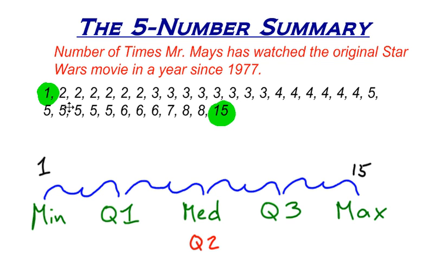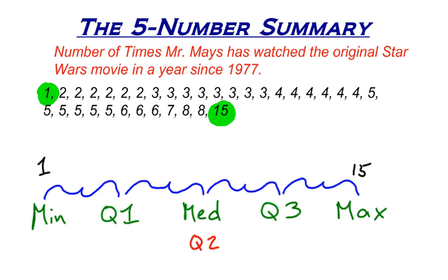We're still using the same data set from our previous videos — the number of times Mr. Mays has watched the original Star Wars movie in a year since 1977. So there was one year where I watched it 15 times. I think that was leading up to Episode One — I wanted to watch all the original trilogy a bunch of times before I saw Episode One. But there's the minimum and the maximum, very easy to find once you put the numbers in order. The median we found in the last video when we were looking at the measures of center.